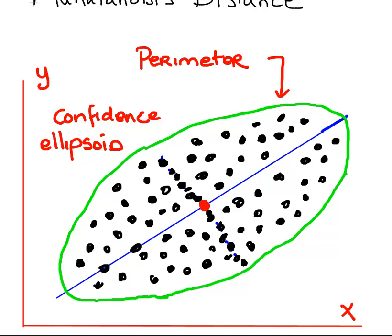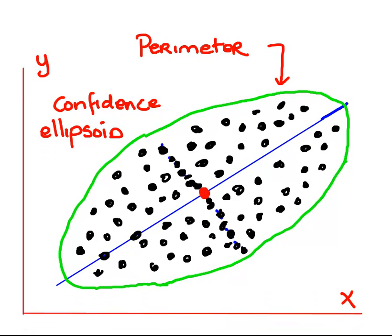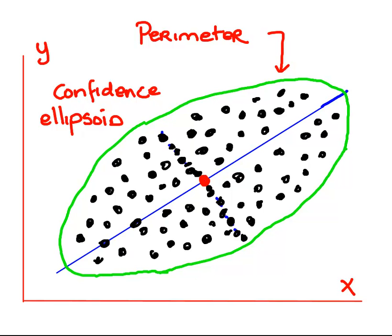A confidence interval on the number line is essentially just a special case of a confidence ellipsoid — that's a good way of looking at it. So essentially, a 95% confidence ellipsoid means we're 95% sure that the mean is in that area, or roughly that 95% of the data should be expected to be there. The confidence ellipsoid is where we expect the data to be mostly. The mathematical components of computing this perimeter are essentially the variance and covariance of Y and X — that's very important.